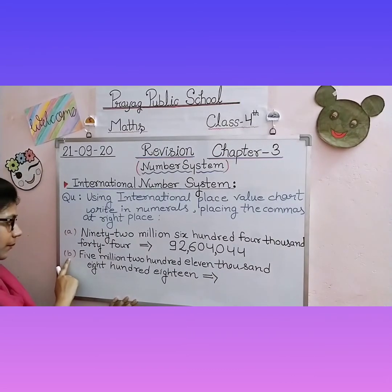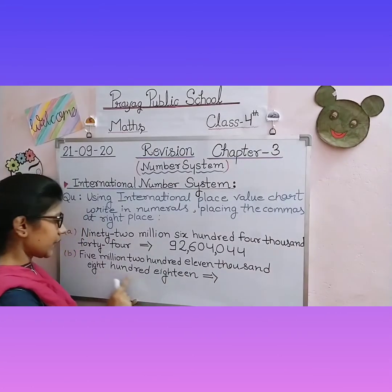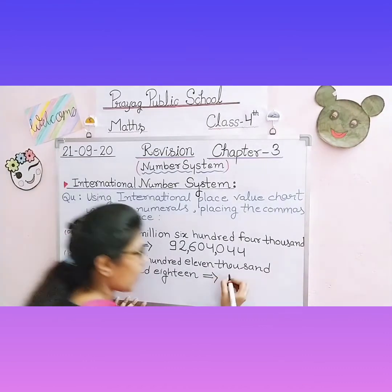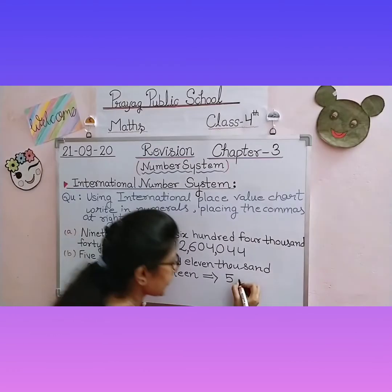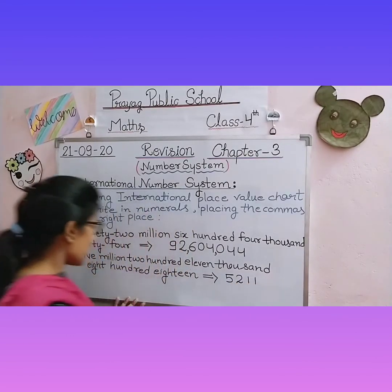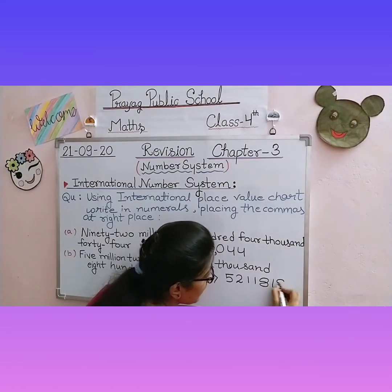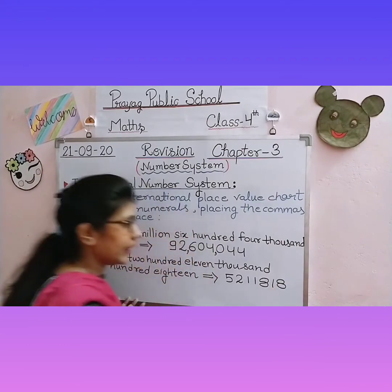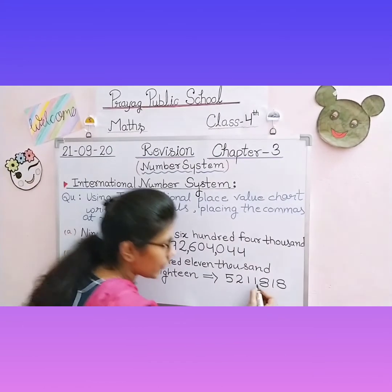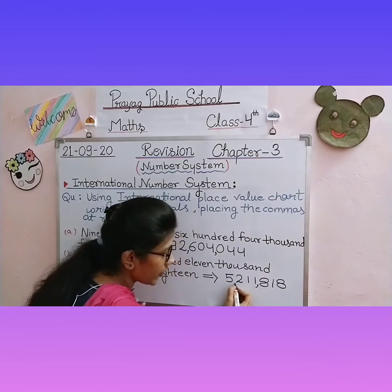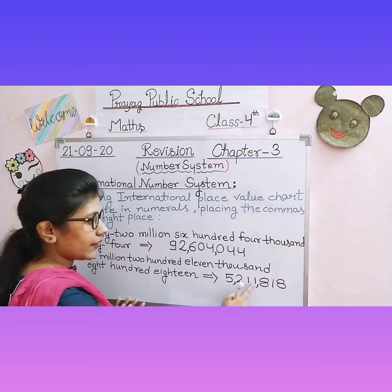Next question, question number B: five million, two hundred eleven thousand, eight hundred eighteen. First write 5 for five million, then 211 for two hundred eleven thousand, then 818. Here all numbers are present so we did not need to write any extra zeros. Now place the commas: ones, tens, hundreds — thousands, ten thousands, hundred thousands. The result is 5,211,818.